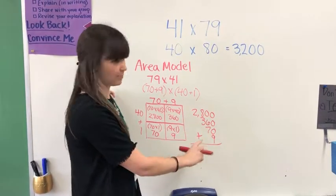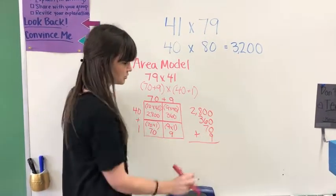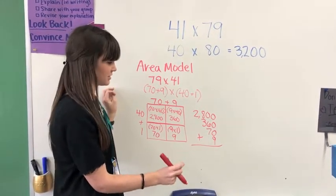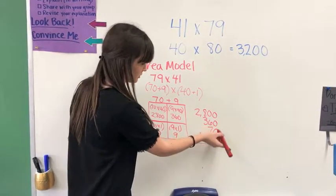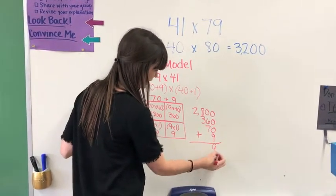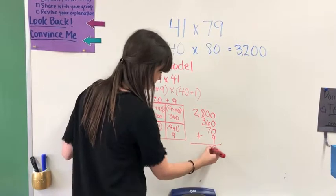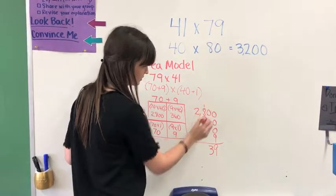Add. Make sure you line up your place value in order to add. You don't want to add numbers that are different values. 0 plus 0 plus 0 plus 9 is 9. 6 plus 7 is 13. Put down the 3, trade the 1.